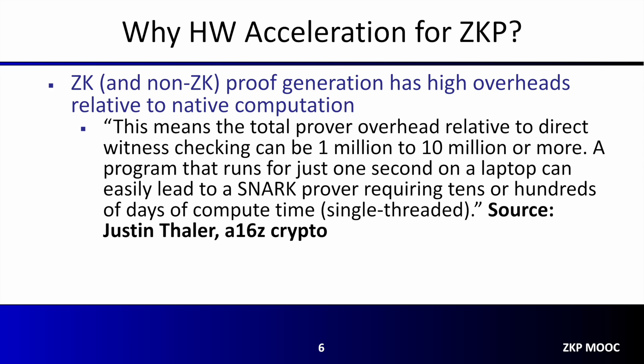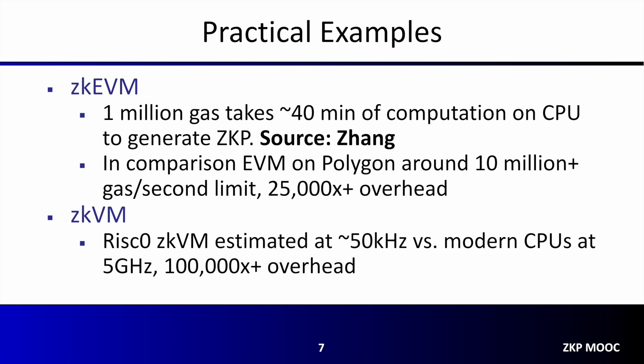To put this in more concrete terms, let's look at two emerging use cases: ZK EVMs, designed to help improve the scalability of Ethereum, and ZK VMs, designed to enable verifiable computation for a broader set of use cases. A presentation earlier in this course series by Ye Zhang put the time to generate a proof for 1 million gas worth of Ethereum transactions at approximately 40 minutes on a CPU. In comparison, the Polygon blockchain runs at around 10 million gas per second using native computation, putting the estimated overhead of proof generation at 25,000 or more.